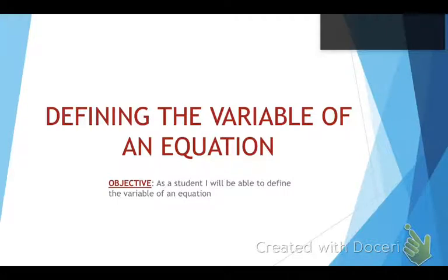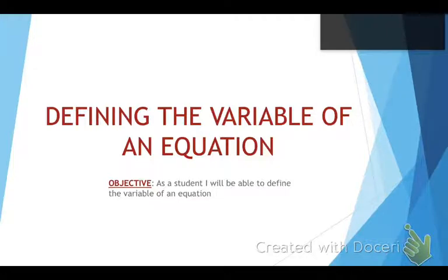Today we're going to talk about defining the variable — that means actually telling us what the variable means — and we're going to solve them and write the equations. We're going to put everything together that we've already learned. Your objective for this video is to define the variable in the equation. That's the big key, because on your I-step you will be asked to do this for at least one problem, and this question is probably the hardest question on the I-step in the first round.